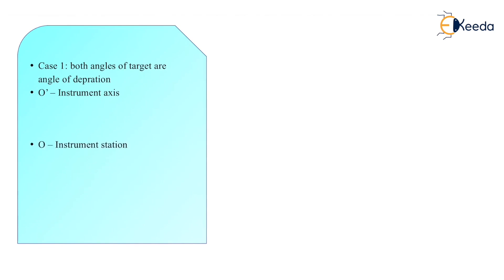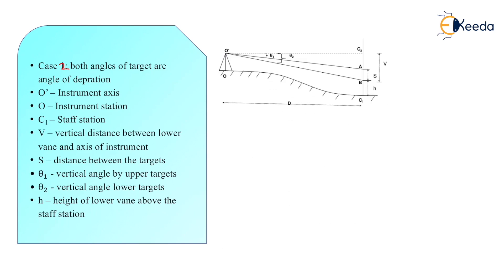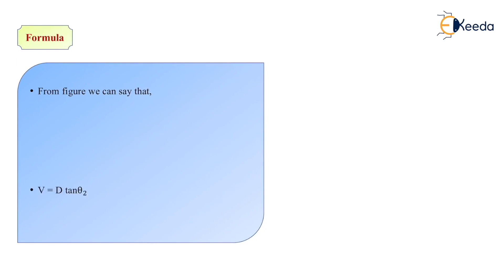In first case, both the angles are in elevation. Now we have both angles are in depression. The notations are same. Just as you can see over here, both the angles are in depression. So V is vertical distance between the lower vane up to the instrument axis. S is your distance between two targets. And H is the distance from lower target to ground. Then we have the formulas. In this case, by using trigonometry, we can conclude the formula for D and V from the figure.